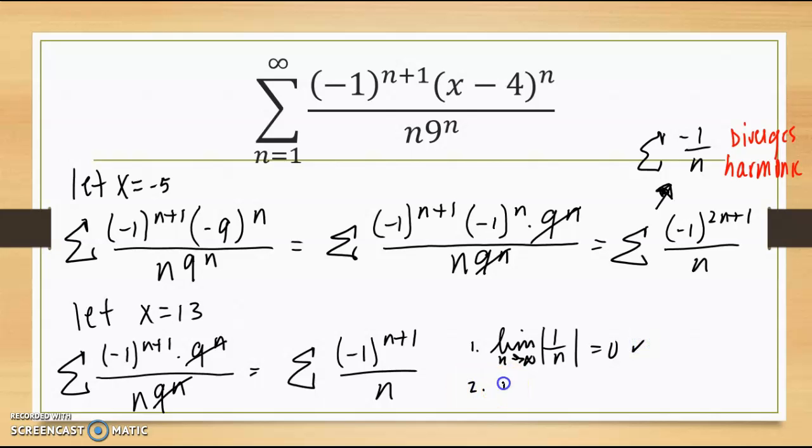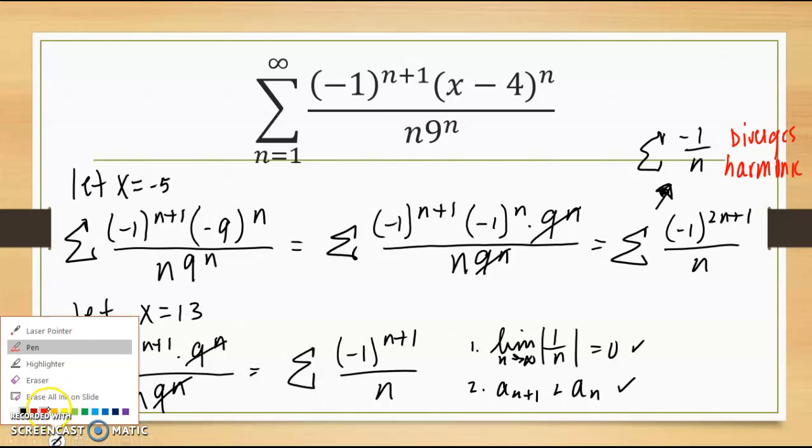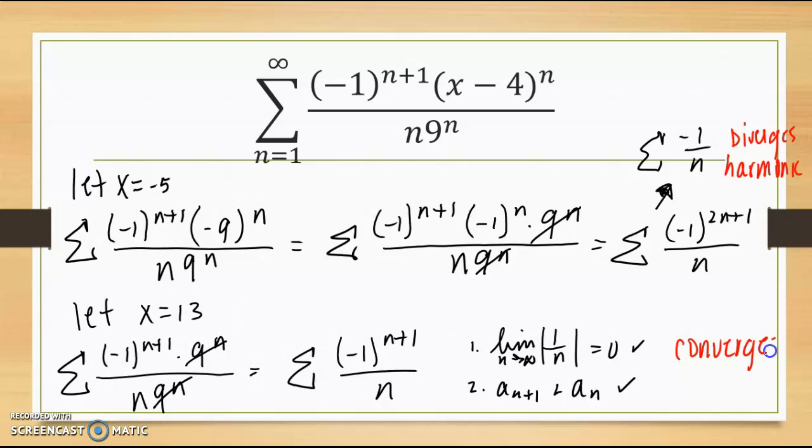And secondly, is my a sub n plus 1 term smaller than my nth term? Is my series decreasing? Yes. So what's my conclusion? At 13, that converges by the alternating series test.